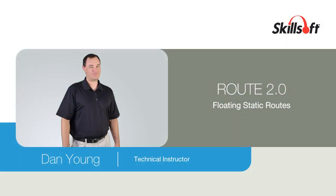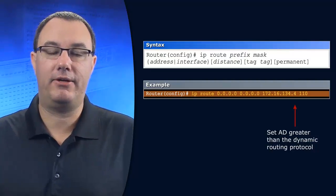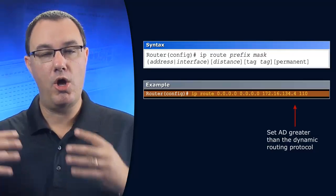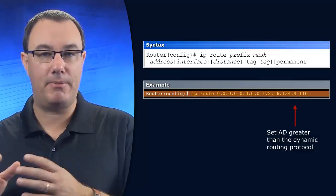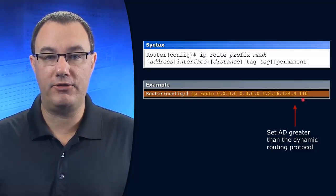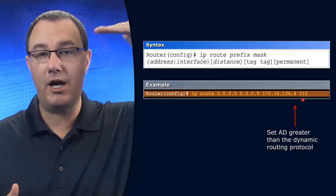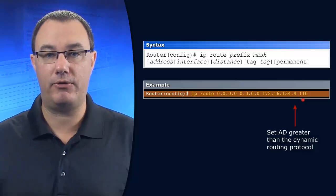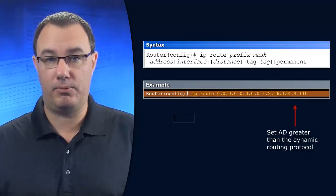If you feel comfortable with static routing, I want you to think about how to marry your static environment with your dynamic routing environment. That's where floating static routes come into play. Floating static routes means we're floating above the administrative distance of our dynamic default route. So we have to understand the administrative distances of our routing protocols first.